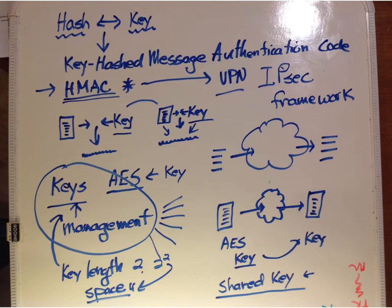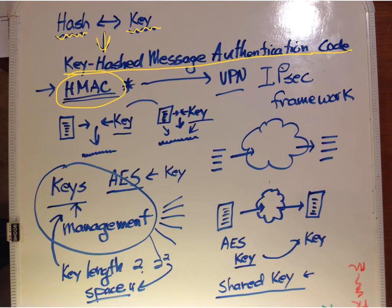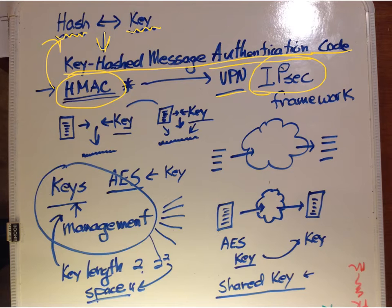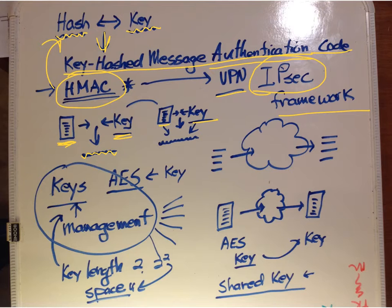We talked about hashing with a key. You bring those together and you get a keyed-hash message authentication code, HMAC. This can be used not only for integrity checking, but also for authentication — used in both. We will make use of that in VPNs. VPN has a framework called IP security. You take the text, add the key, put them together to get the hash, then repeat the process at the other end. They reverse the process and compare — if they're equal, it's okay for both integrity and authentication.